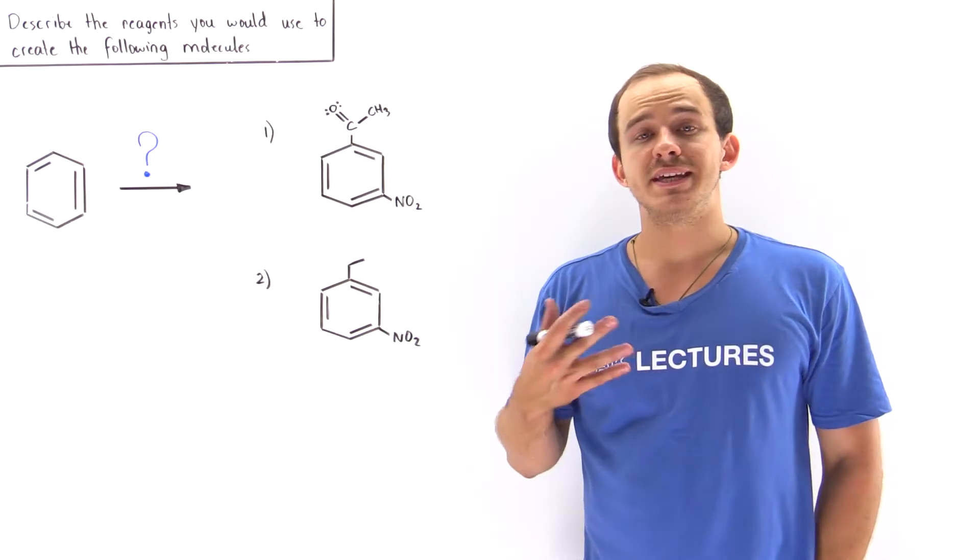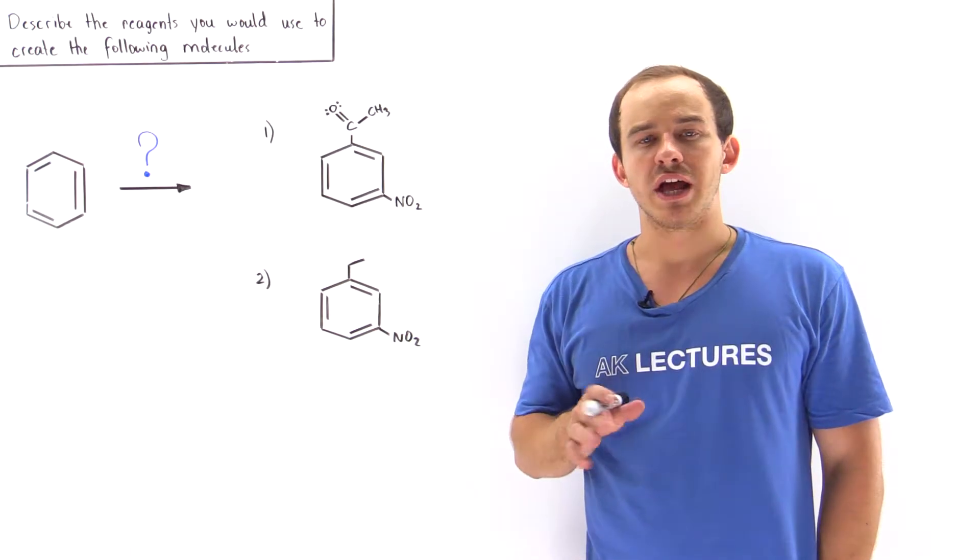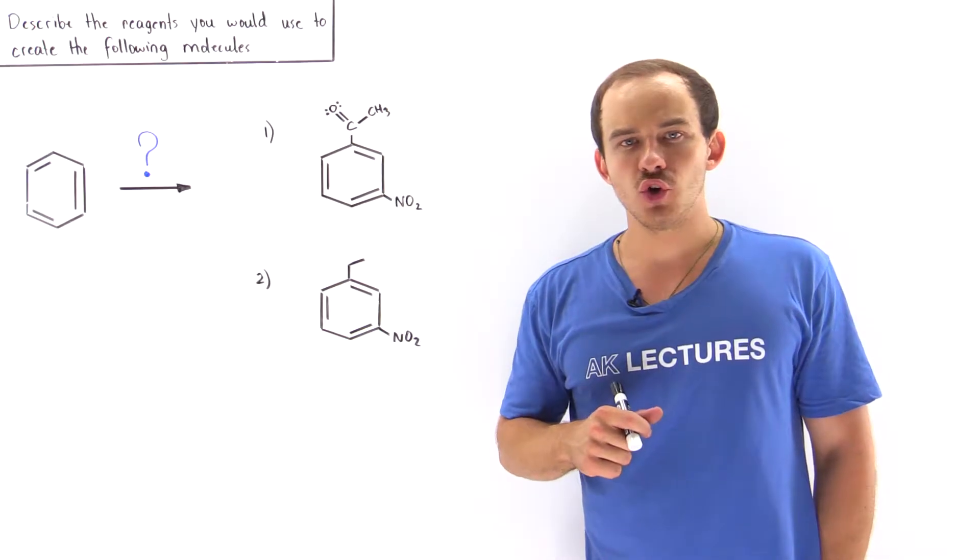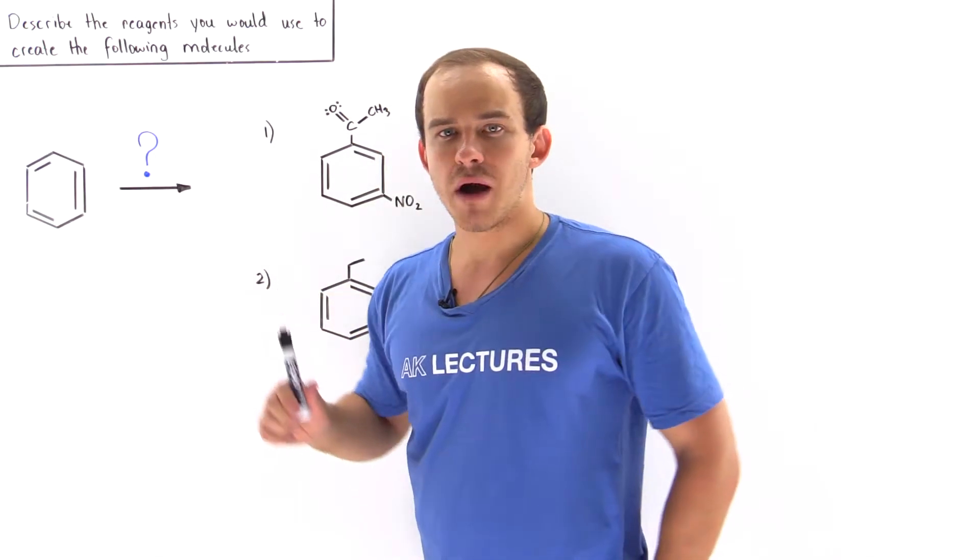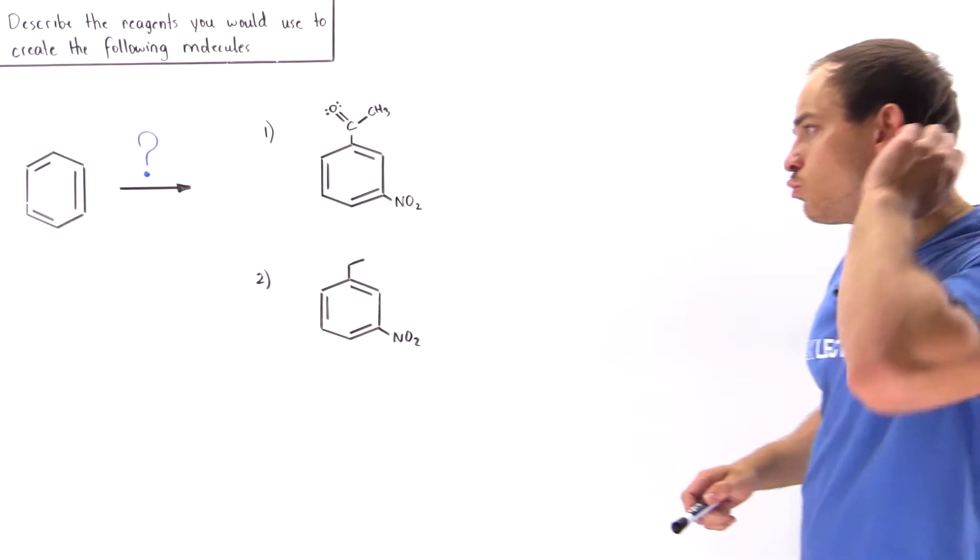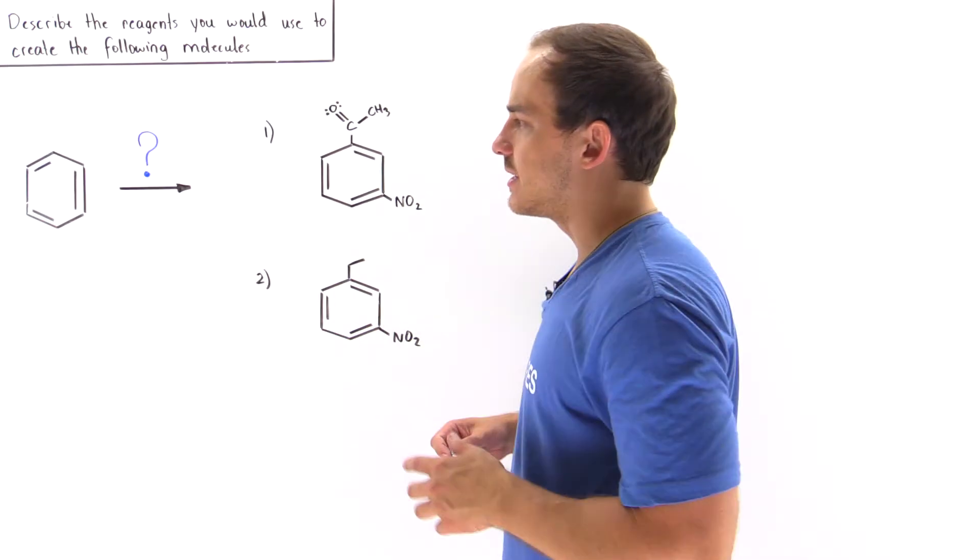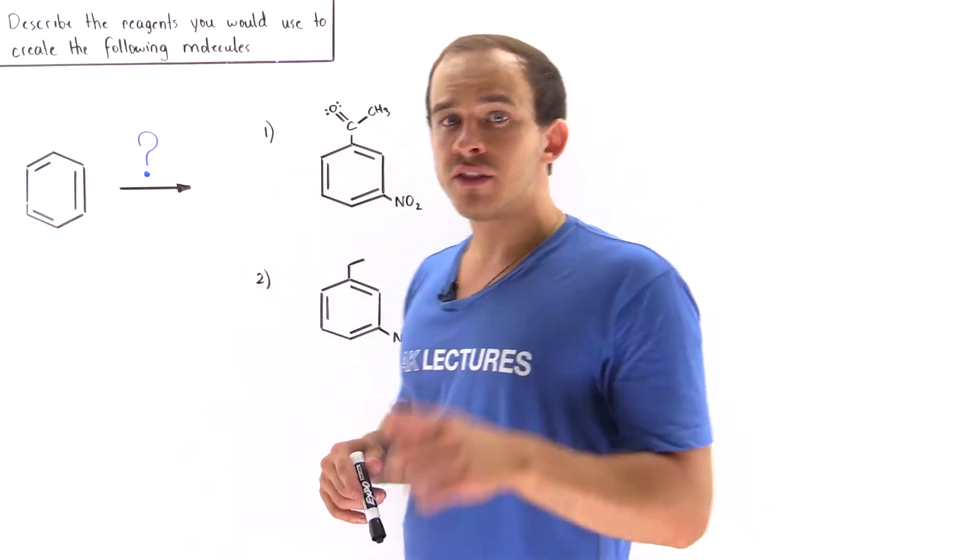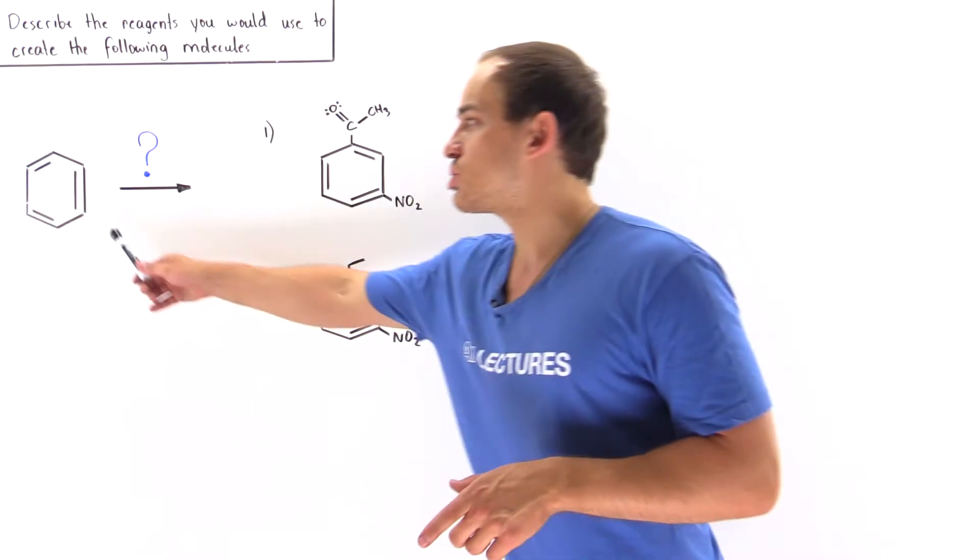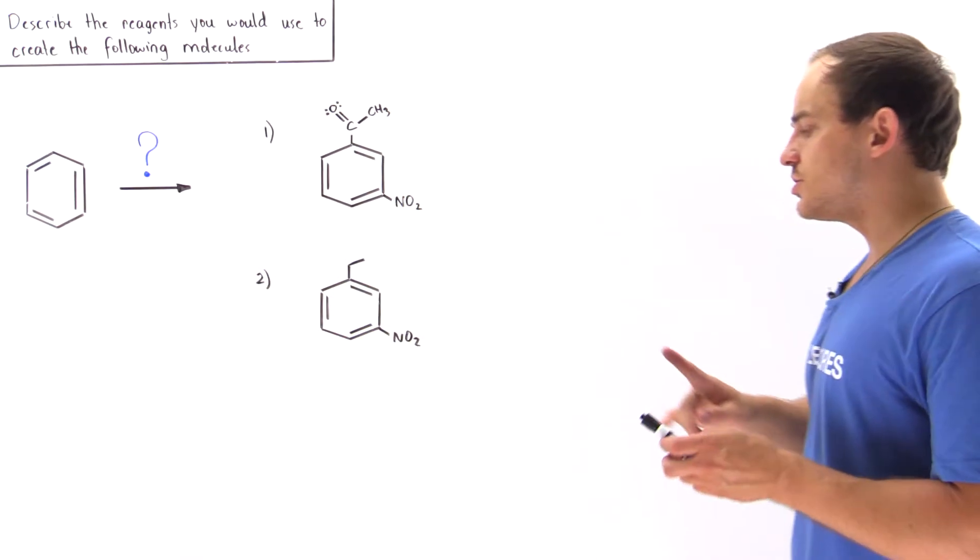Let's suppose we begin with the benzene molecule and we are asked to describe the reagents that we have to use to get from benzene to these two products. We don't really care about the reaction mechanism, we only want to focus on describing the reagents that we have to use to get from the starting material to these two products.